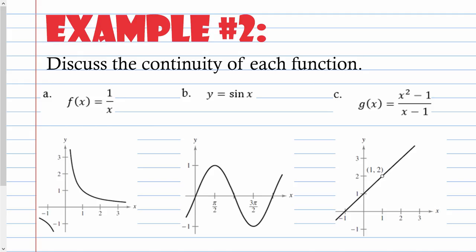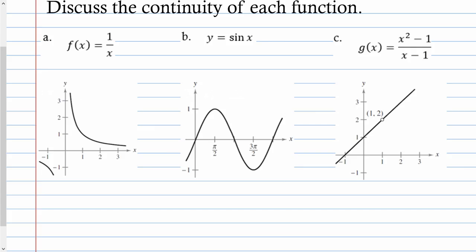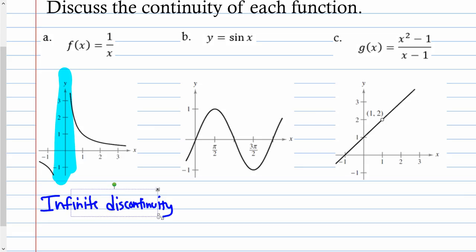Example 2: Discuss the continuity of each function. Part A: f(x) = 1/x. There is a big gap caused by a vertical asymptote, so it is discontinuous. This is an infinite discontinuity. We say: f(x) has an infinite discontinuity at x = 0.